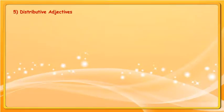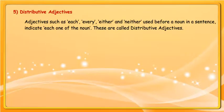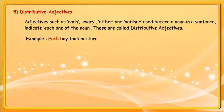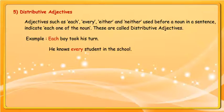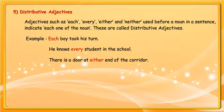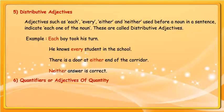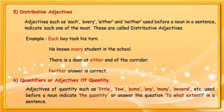Distributive adjectives: Adjectives such as each, every, either, and neither, used before a noun in a sentence, indicate each one of the noun. These are called distributive adjectives. Examples: Each boy took his turn. He knows every student in the school. There is a door at either end of the corridor. Neither answer is correct.